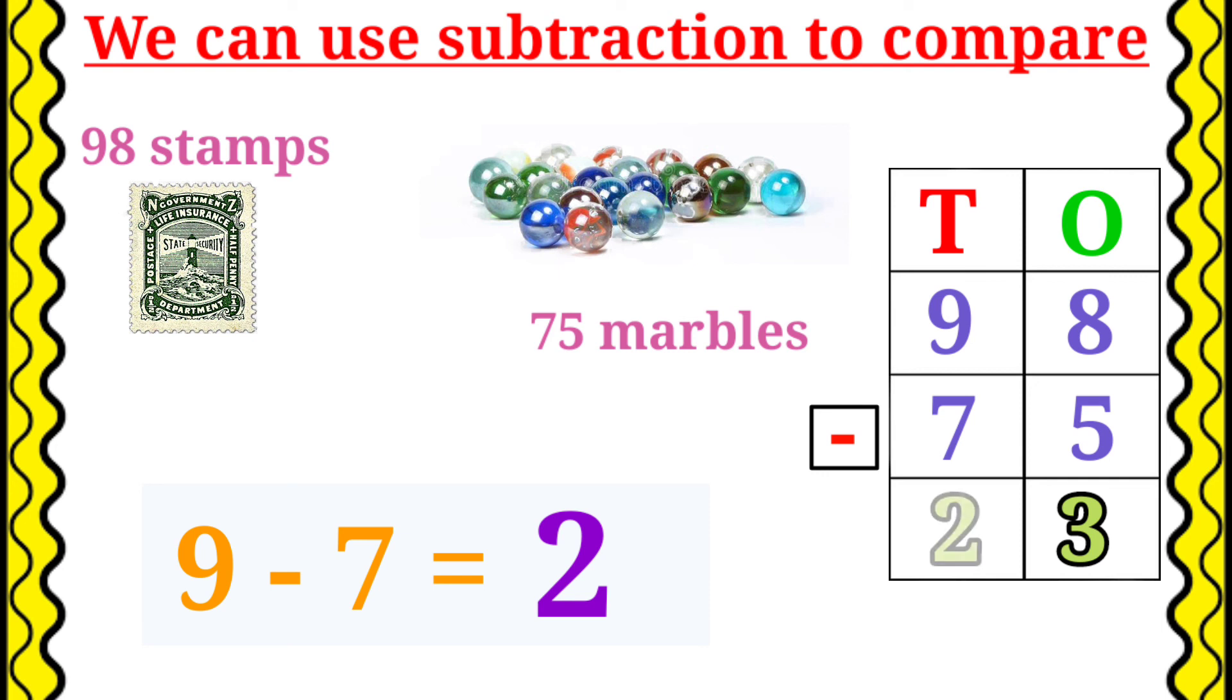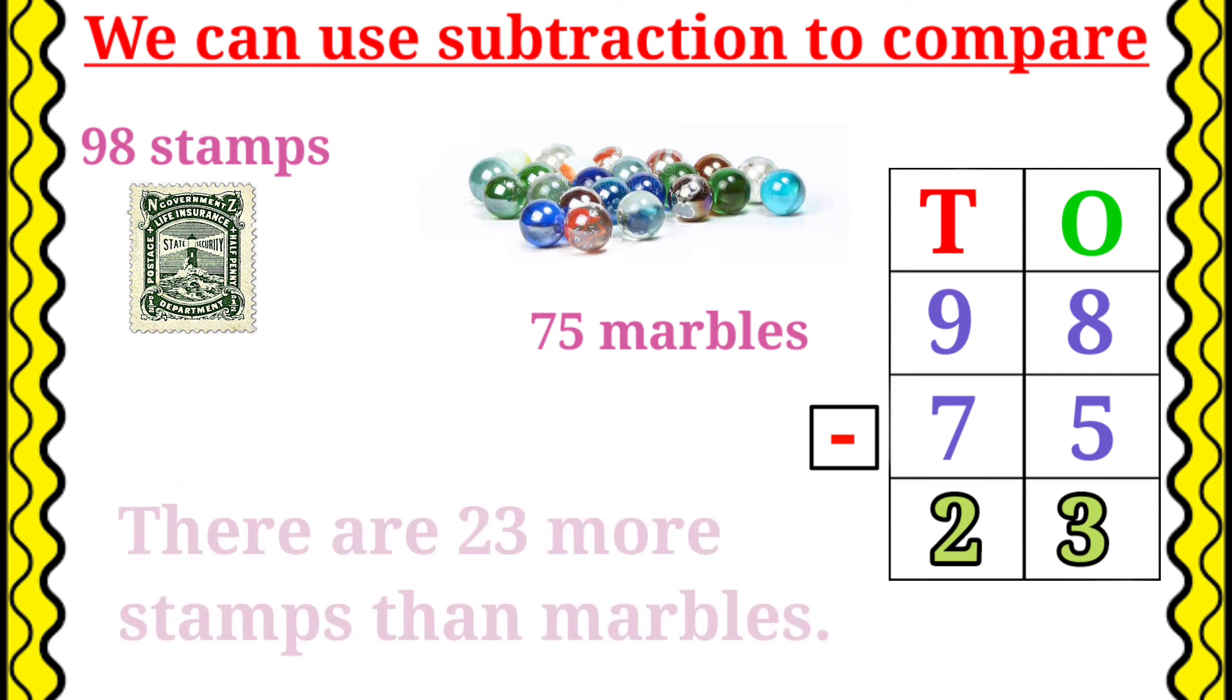9 minus 7. We know that 9 minus 7 is equal to 2. So, let's write the number 2 in the 10s place. Therefore, the answer is there are 23 more stamps than marbles.